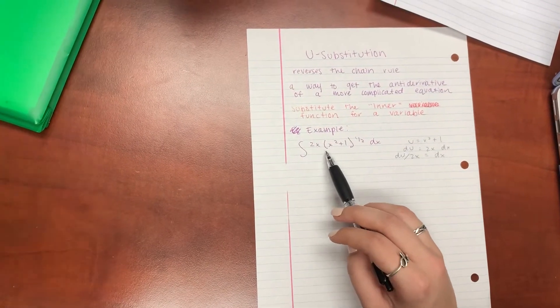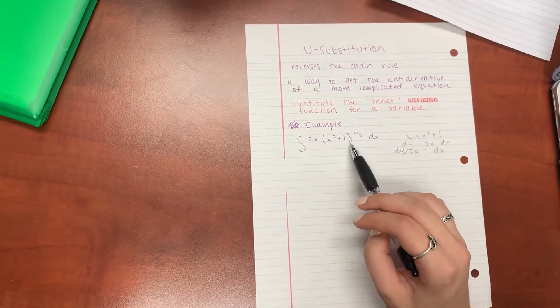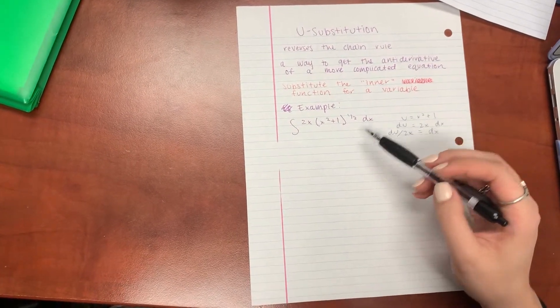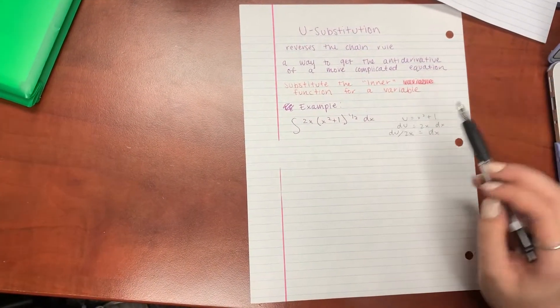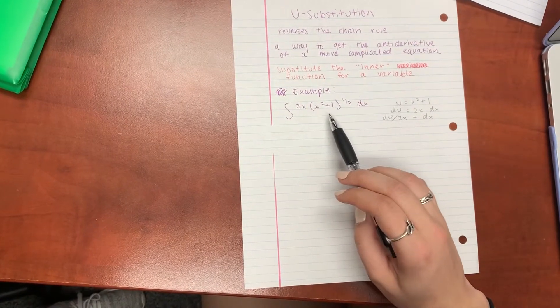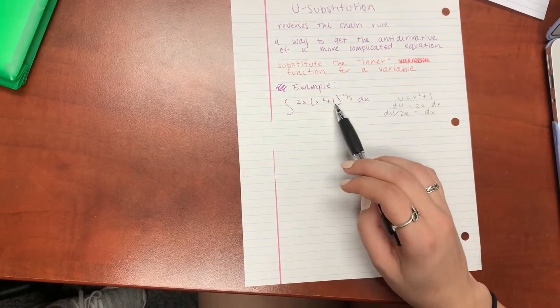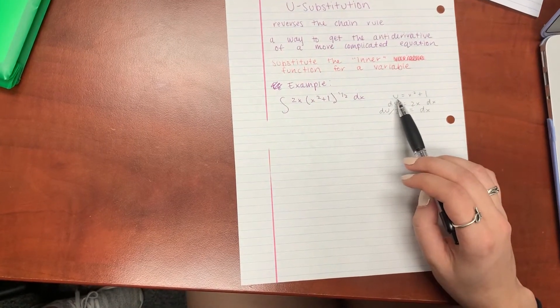So as you can see, our function is 2x times x squared plus 1 raised to the 1 half, and there is a dx attached to it, which means that this is a derivative. So we are going to let our inner function, which is x squared plus 1, become our u variable.